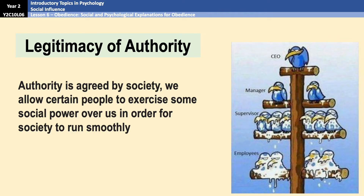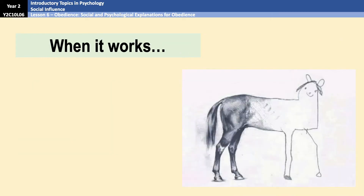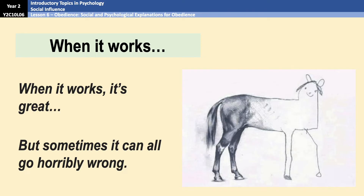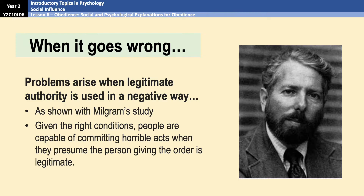In effect, we give up some of our independence and allow other people to make the rules which we then follow, because otherwise society would be carnage. This is something we learn in childhood and it is reinforced through the process of socialization — when your parents say things like 'listen to the policeman' or 'do what your teacher says,' or when you get older and you know not to annoy the bouncer in the club. When it works it's great, but when authority is used in a negative way it can go very badly, as we saw in Milgram's research where people were willing to cause harm to others just because a legitimate authority figure ordered them to.